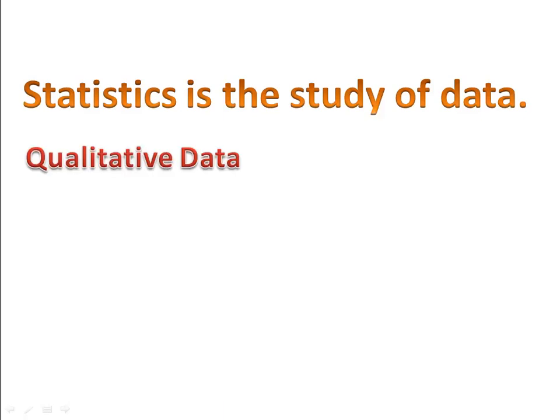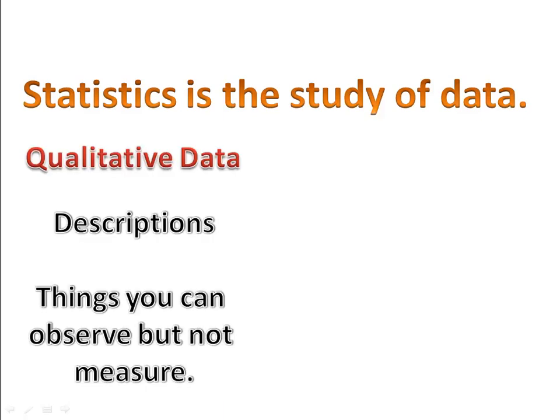We have two types of data. We have qualitative data, which deals with descriptions — things that you can observe but can't really measure on a numerical scale. For example, color, texture, smell, taste, appearance, zip codes, and so on. Anything that describes something is called qualitative data. It deals with the qualities.